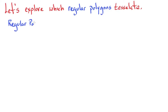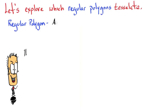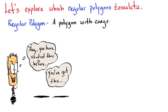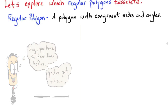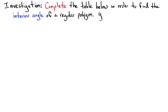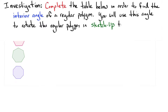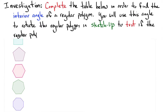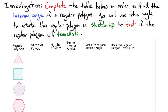What's a regular polygon? A regular polygon is a polygon with congruent sides and angles. Let's do a little investigation. Complete the table below to find the interior angle of a regular polygon. You will use this angle to rotate the regular polygon in SketchUp to test if the regular polygon will tessellate.